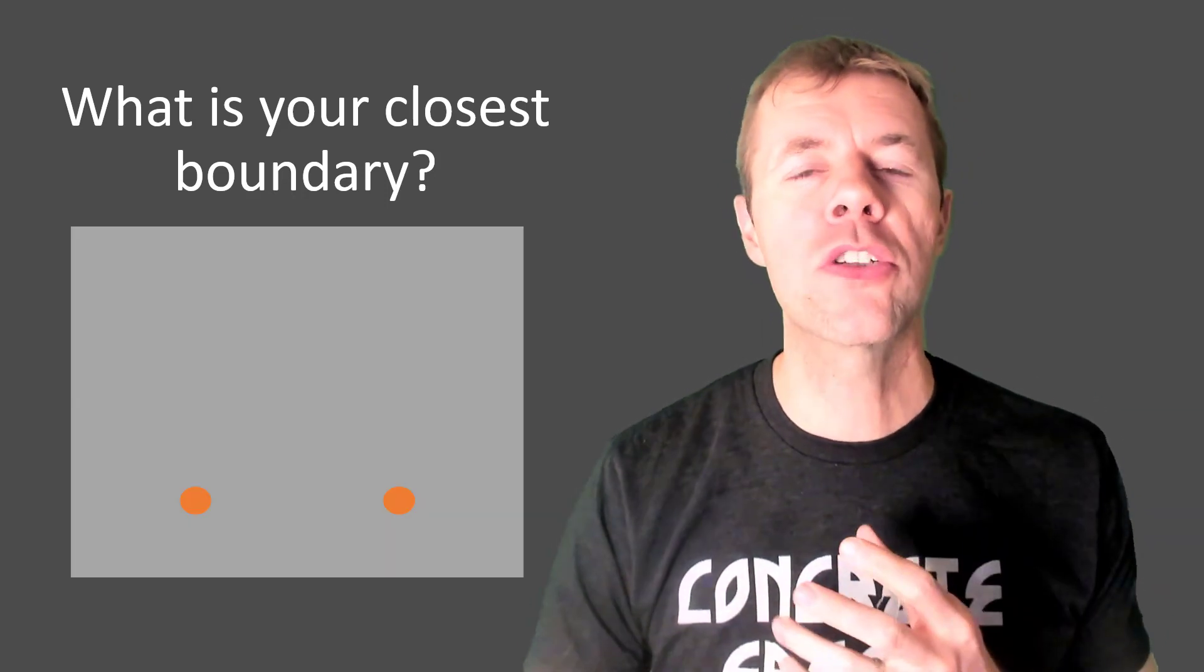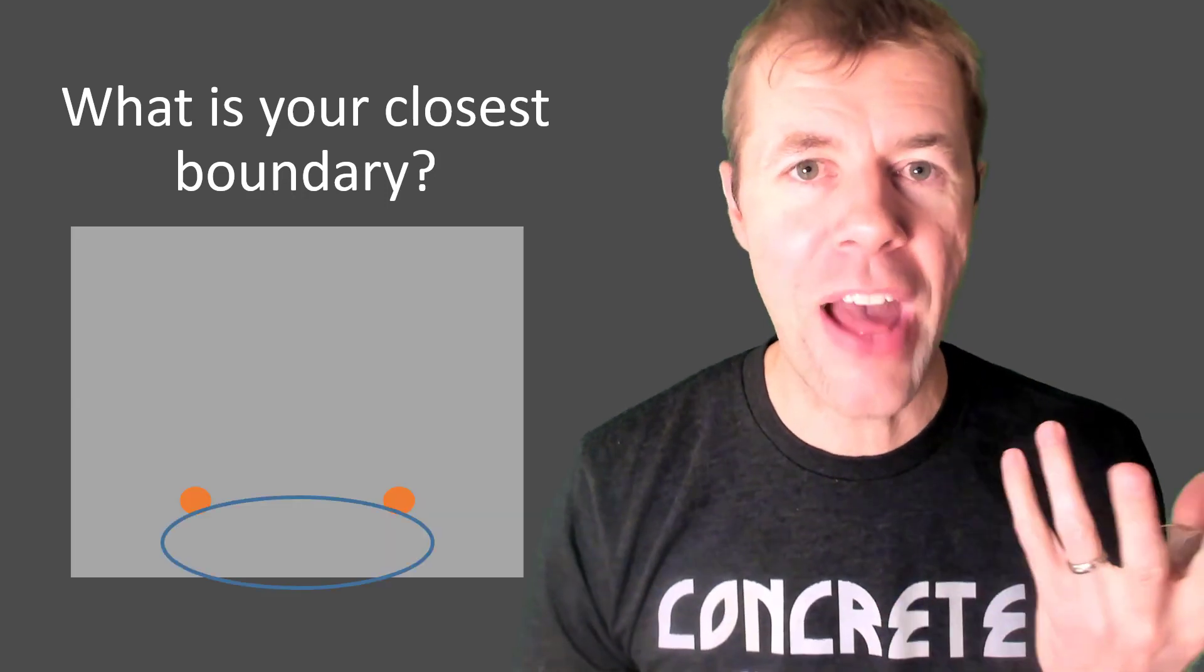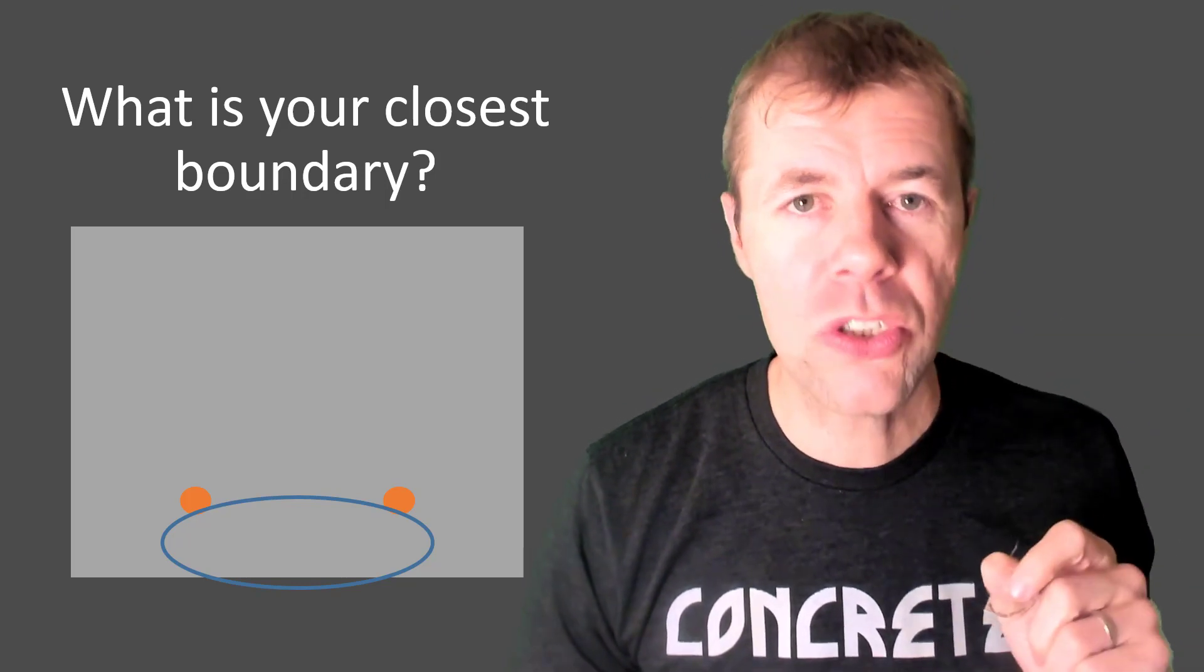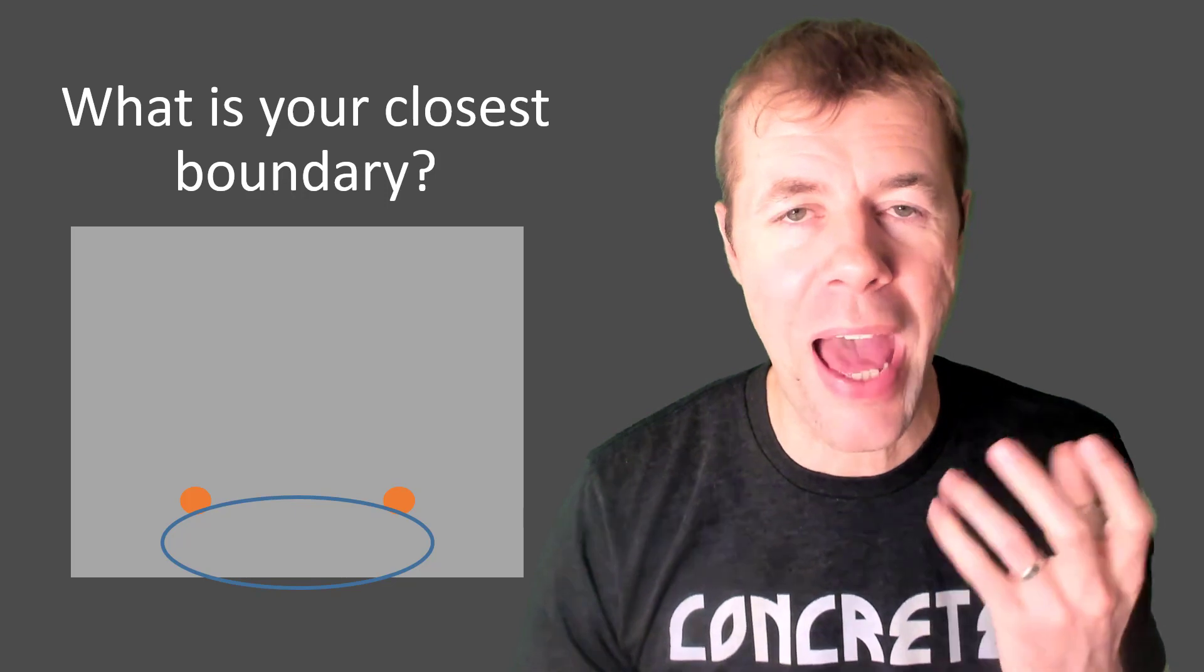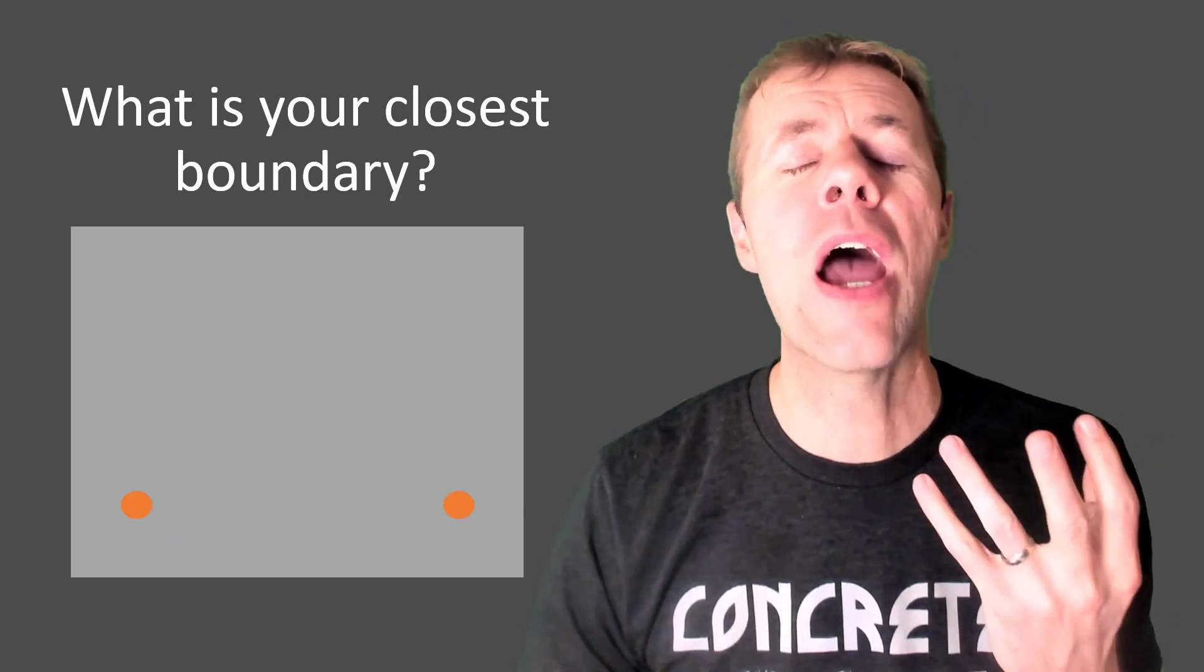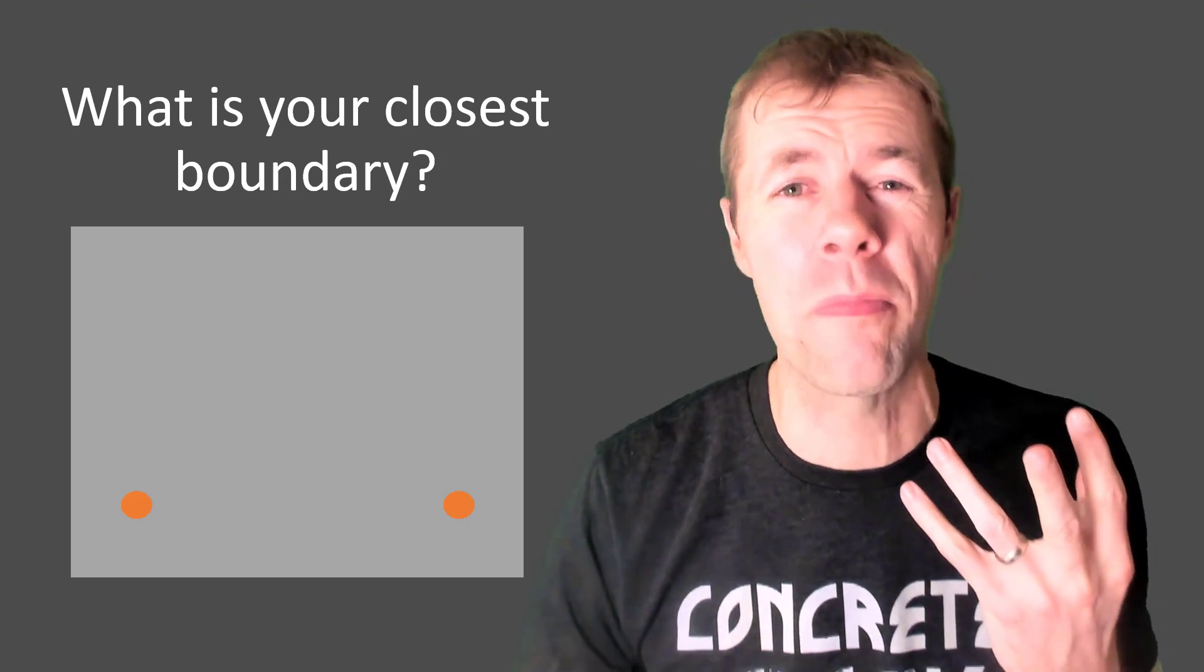So if I have a structure that looks something like this, I'd say, hey, that's the closest boundary. That is the closest edge from my bar toward the outside surface of my concrete, and that is where the cracks are gonna form. And if the outside boundary is closest here, then we will see the cracks form there.